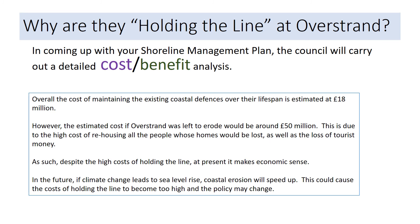Overall, they are holding the line at Overstrand because of the infrastructure, houses, and tourism that need protecting. To reach that decision, a cost-benefit analysis had to be carried out. The cost of maintaining the existing coastal defenses over their lifespan is estimated at around 18 million pounds. However, if Overstrand were left to erode, the cost would be around 50 million pounds, due to rehousing people whose homes would be lost and the lost tourism revenue. Despite the high cost of holding the line, it currently makes economic sense.